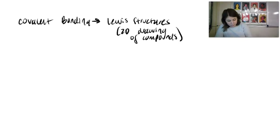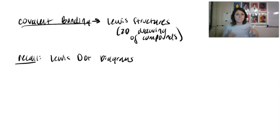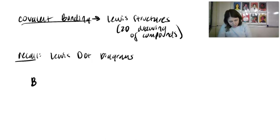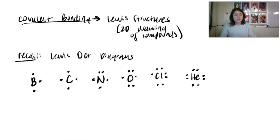Just to do a little bit of a recap: recall that we learned about Lewis dot diagrams, where we took the chemical symbol of our element and drew dots around it based on how many valence electrons they have. For example, boron in group 13 has three, carbon in group 14 has four, nitrogen in group 15 has five, oxygen in group 16 has six, chlorine in group 17 has seven, and helium has eight.